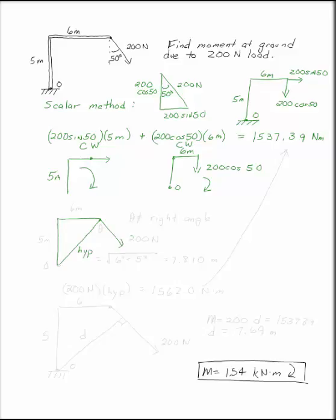And the hypotenuse is going to be the square root of 6 squared plus 5 squared. Note that this distance, this 200 newtons times the hypotenuse, ends up being 1,562.0.